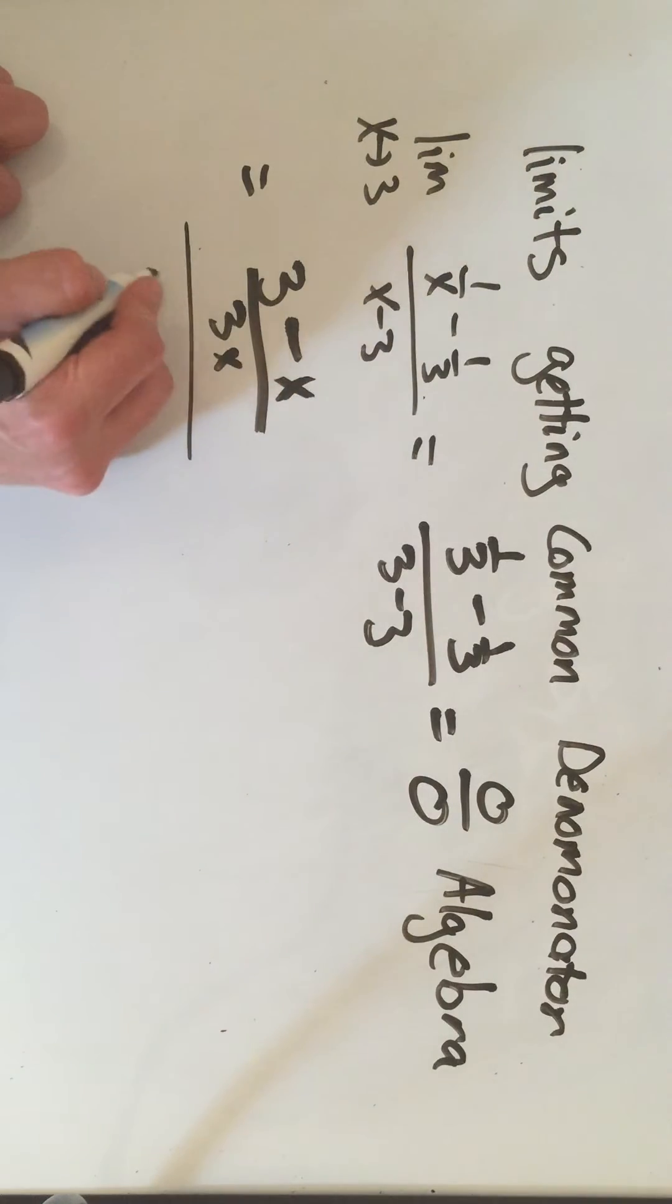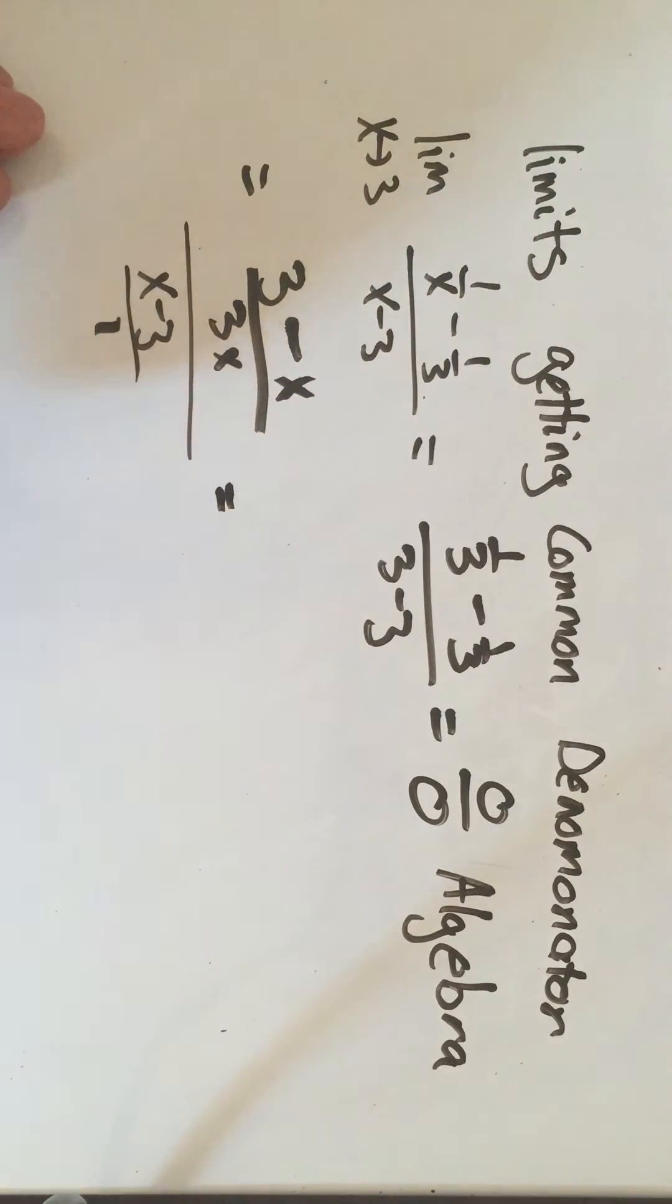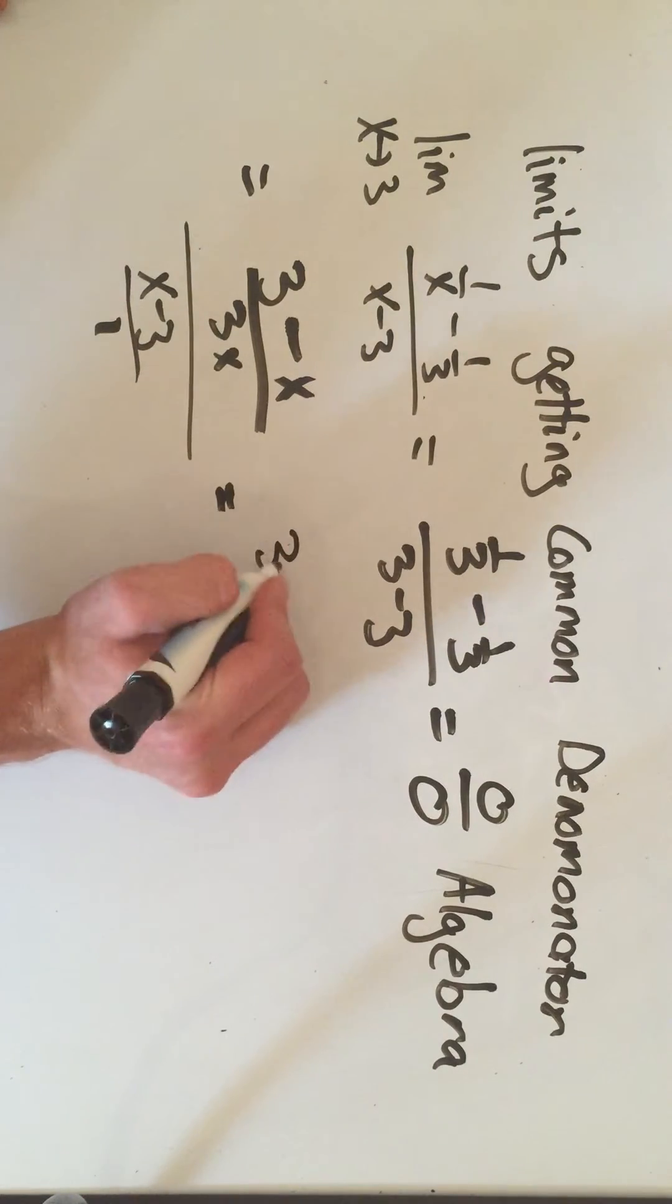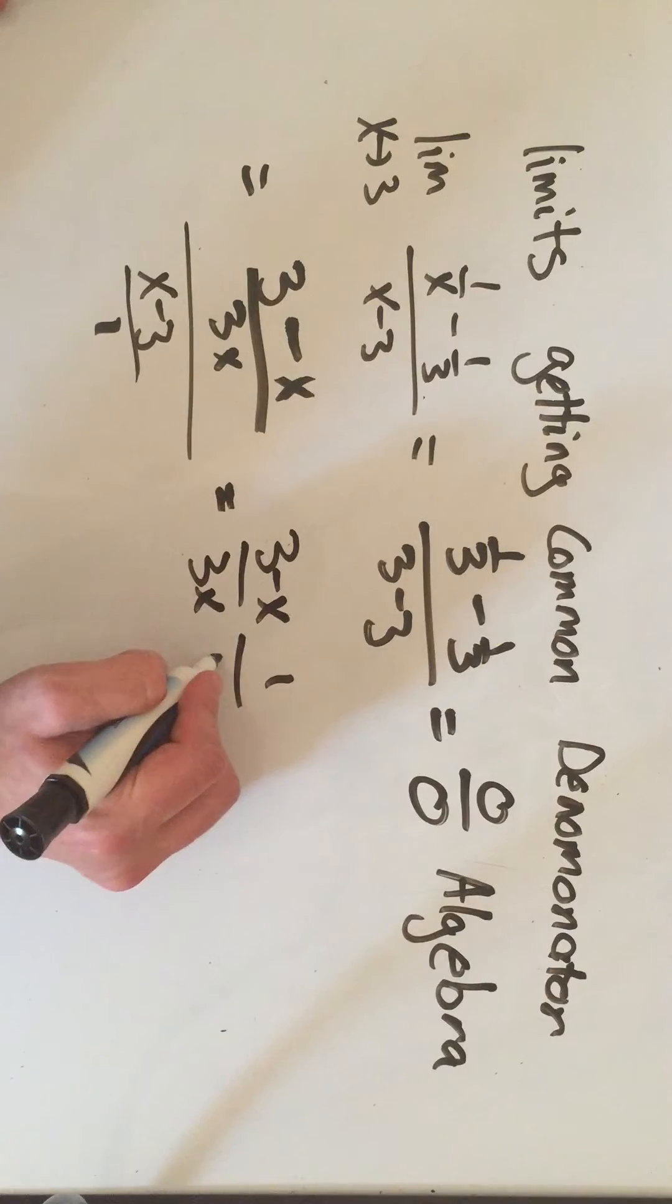And that's still all over x minus 3. So I can clean this up a little bit. If you think about this as x minus 3 all over 1, I have a fraction over a fraction. That means I flip and multiply.